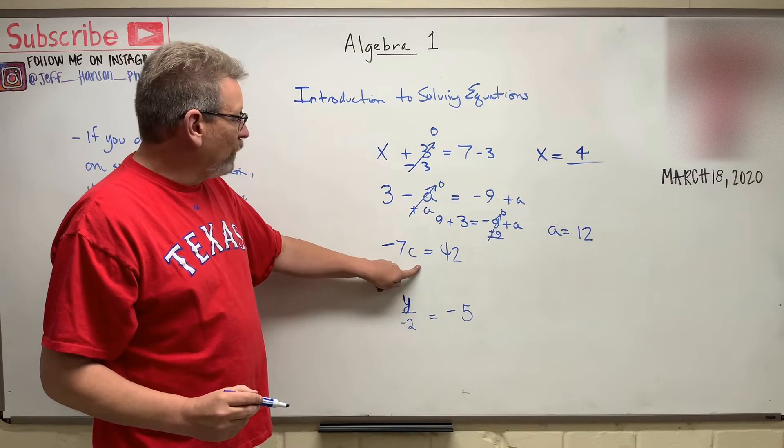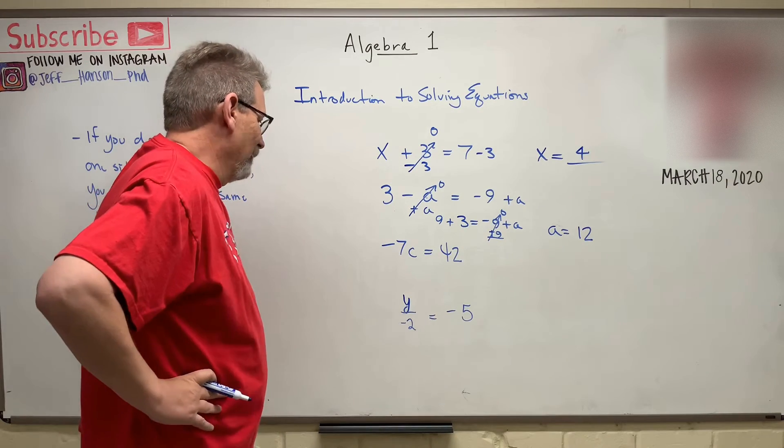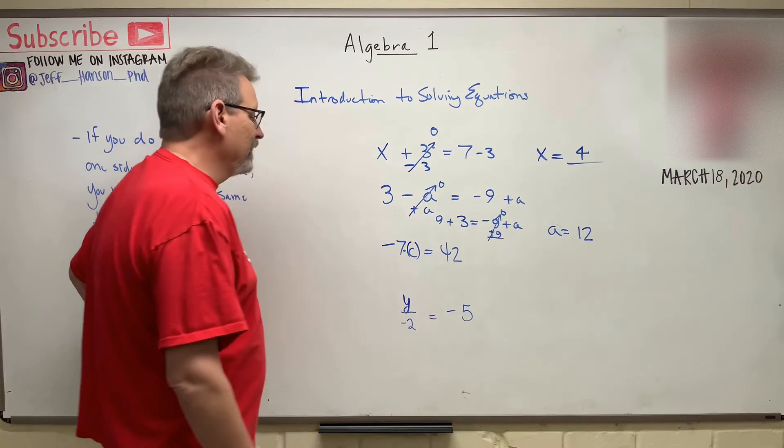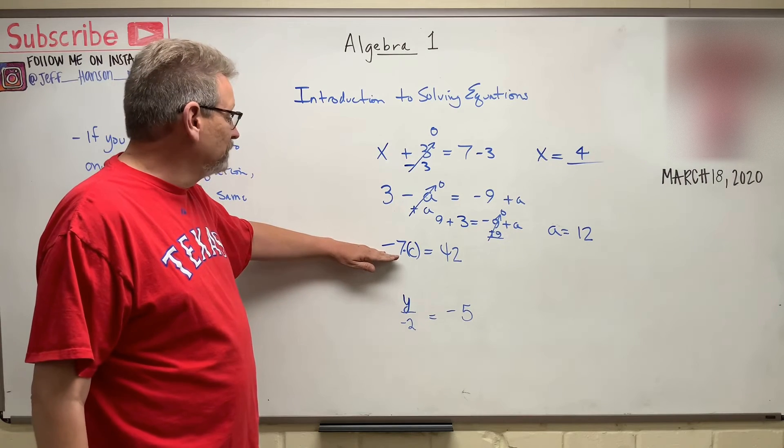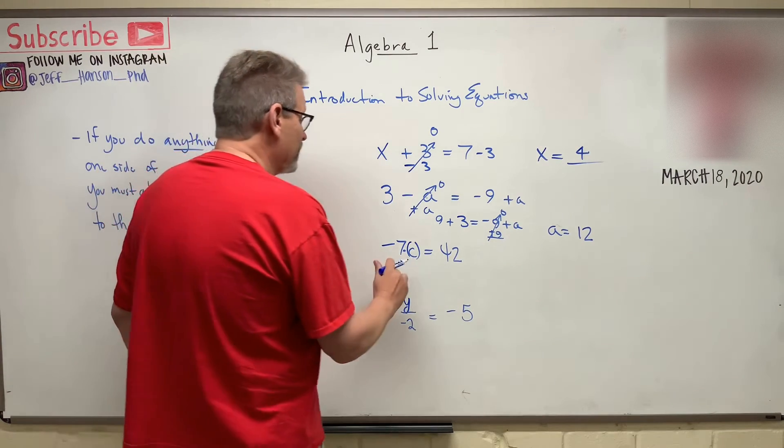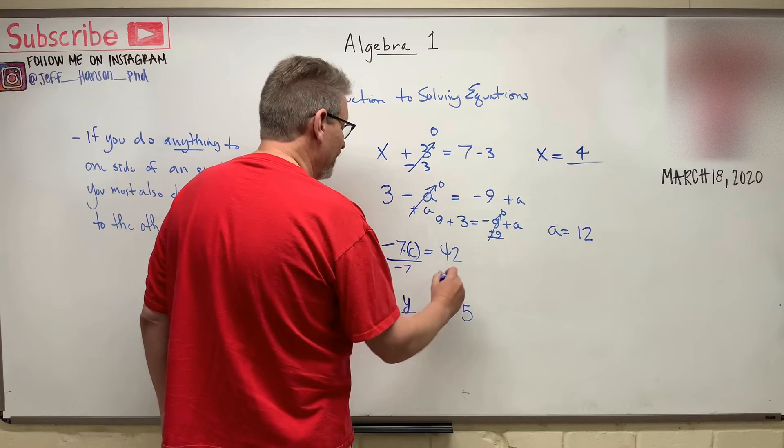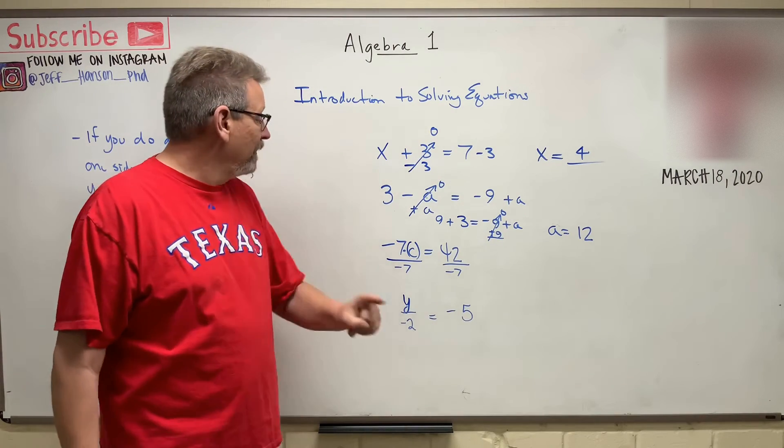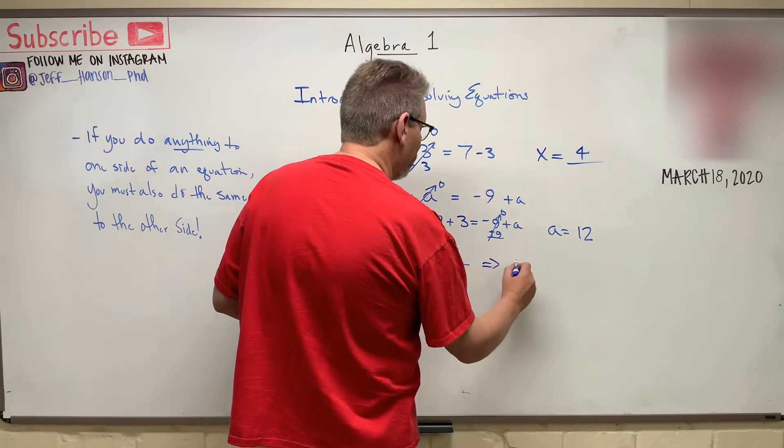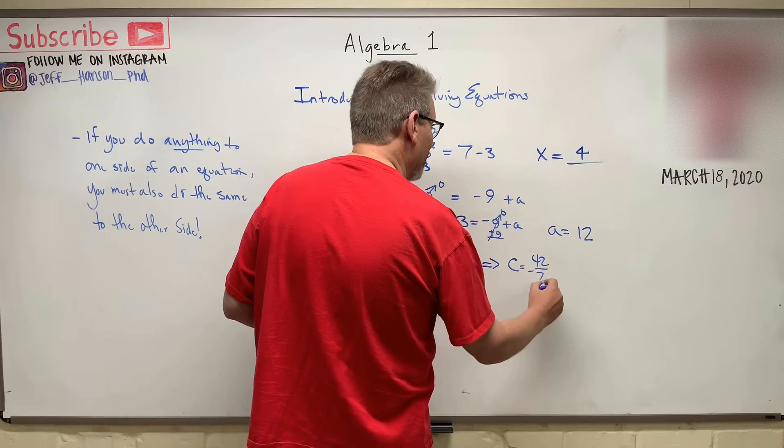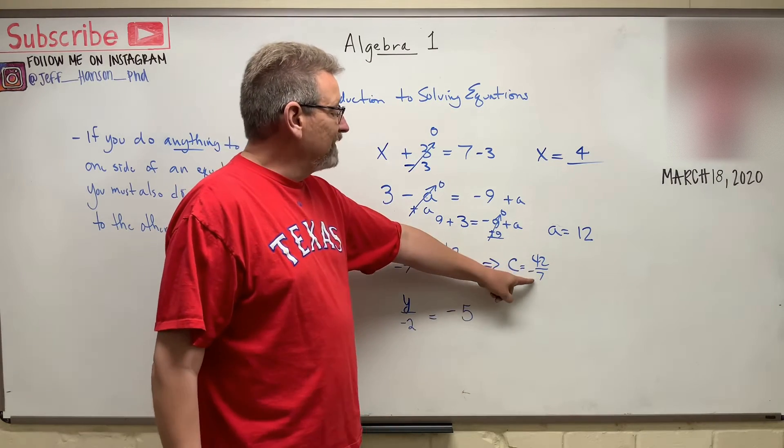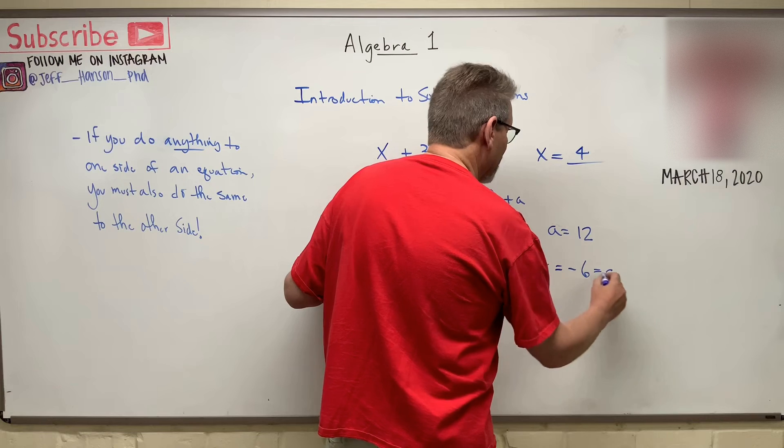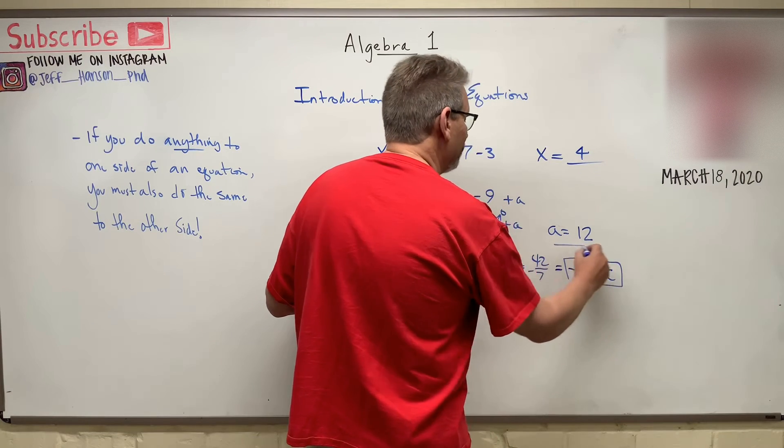Can we do it again? I want C by himself. Ooh, I don't have add this time. What should we do? Well, here's what we have. These two guys are multiplied together. So how do I get rid of a minus seven on this side? I want him gone. I'll tell you what you can do. You could divide this side by minus seven and divide that side by minus seven. Because what is minus seven divided by minus seven? One. So that's going to leave you with C is equal to forty-two over minus seven. And forty-two, how many times does seven go into forty-two? Six times. Minus six. So C is equal to minus six for that one.